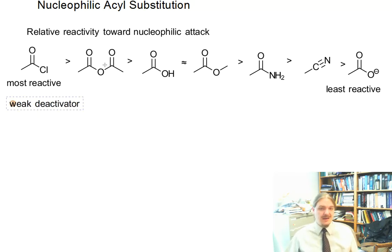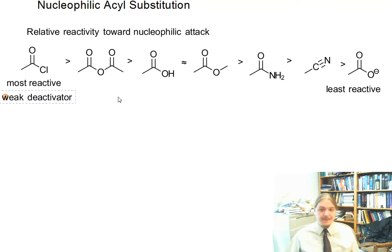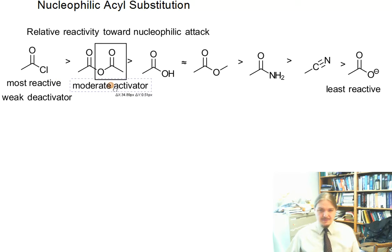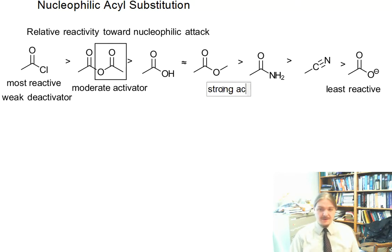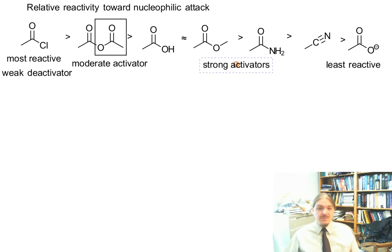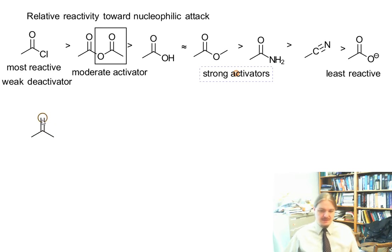Chlorine and the halogens are weak deactivators — they are electron withdrawing groups. The acetoxy group is a moderate activator, and the other functional groups, with the exception of the nitriles, are all strong activators. So what we're comparing here is the relative ability of whatever substituent Z is attached, where Z usually has at least one lone pair, to be electron donating through resonance.